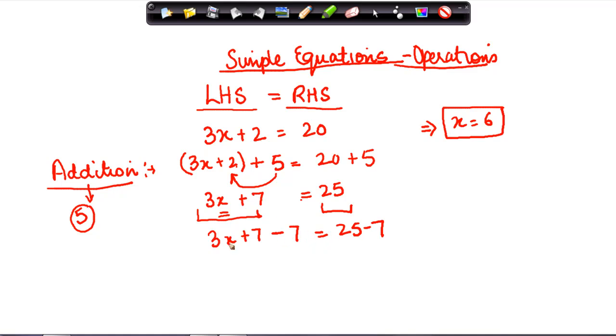So I subtract 7 from both the sides. This 7 will get cancelled with this 7. What I am left with here is 3x. 25 minus 7 is equal to 18.